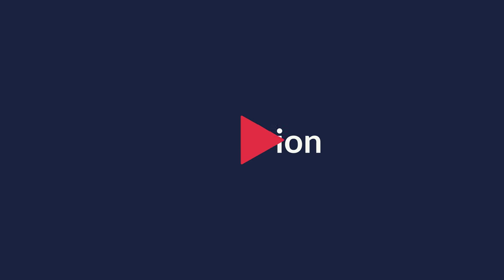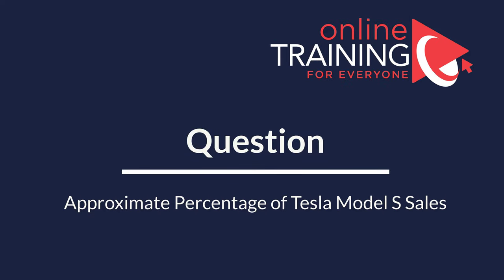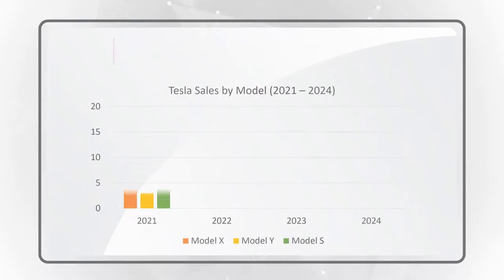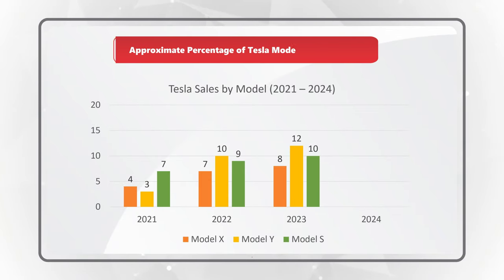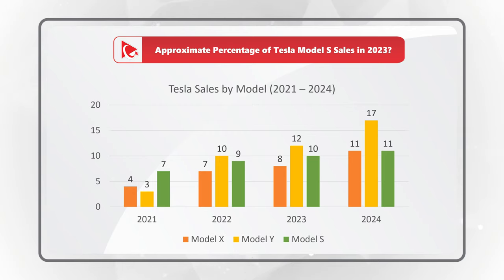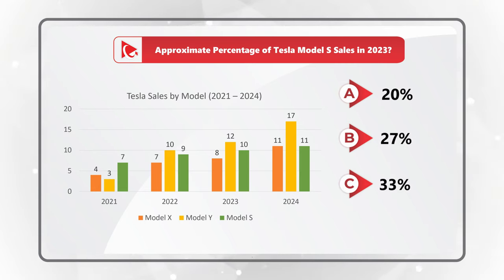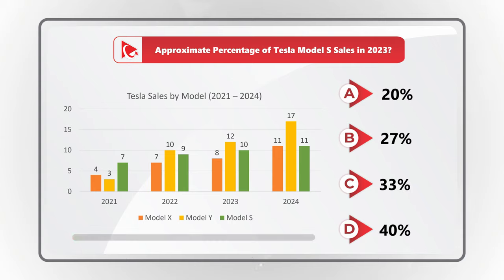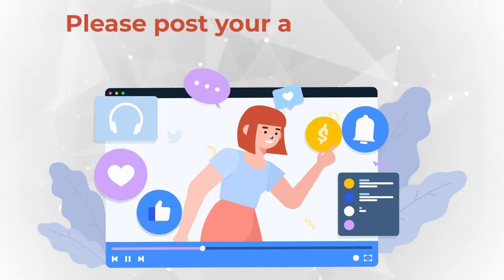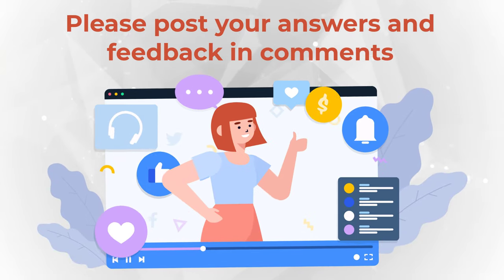Now I think it's an excellent time for you to try your skills. You need to determine the approximate percentage of Tesla Model S sales in 2023. You're presented with a chart showing sales by model between 2021 and 2024. You have 4 different choices: Choice A, 20%. Choice B, 27%. Choice C, 33%. And choice D, 40%. Give yourself a little bit of time, do the mental math, maybe pause this video to see if you can get to the correct solution. Please post your answer in comments. Thanks for participating and good luck.